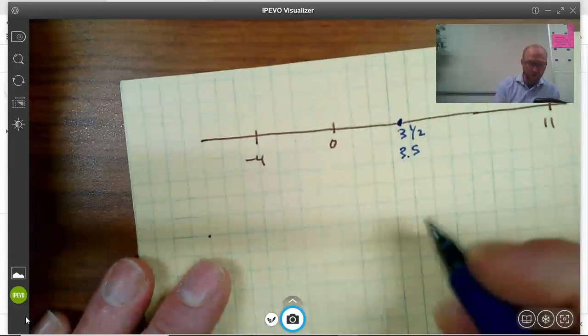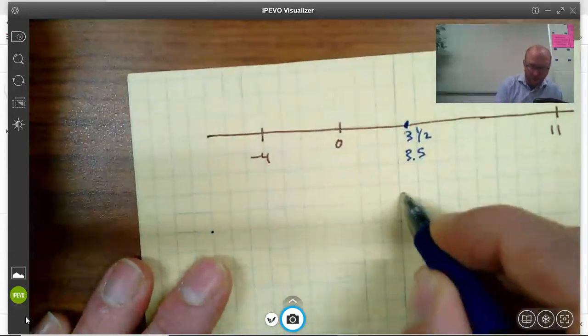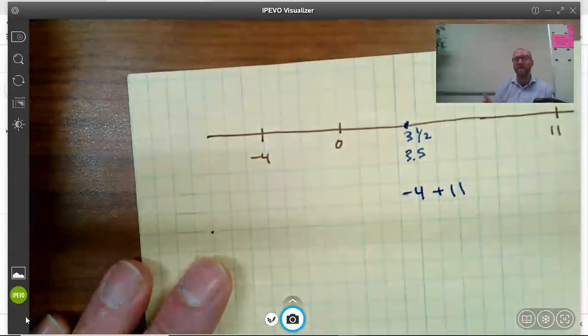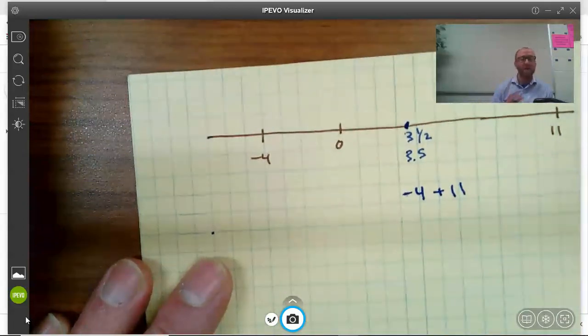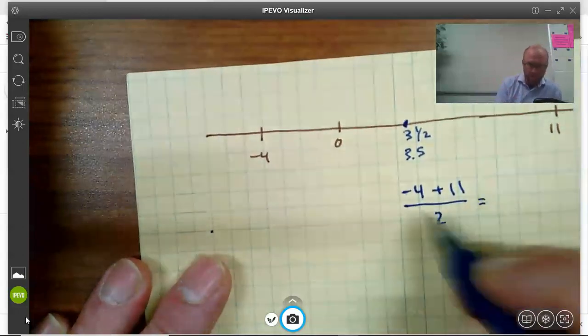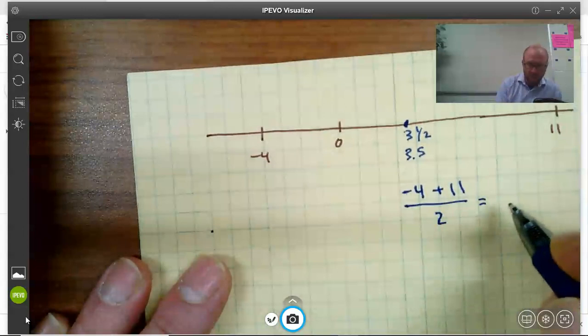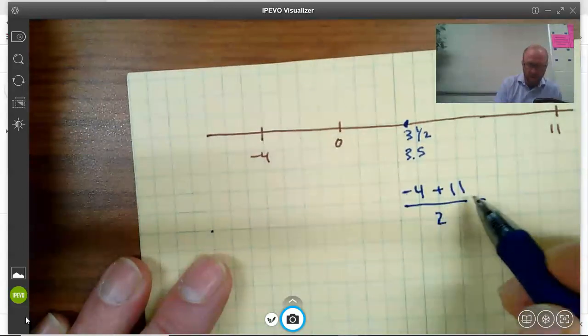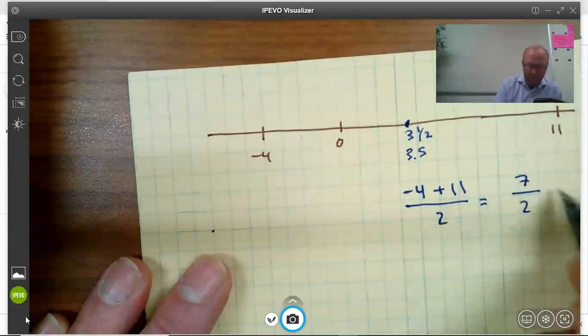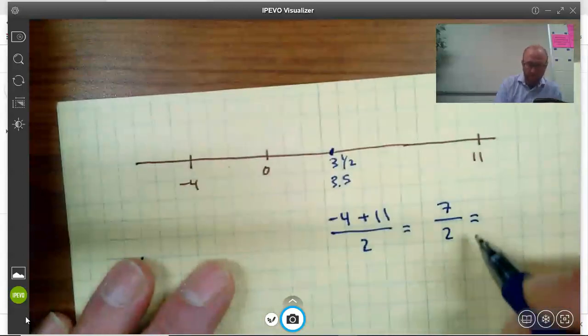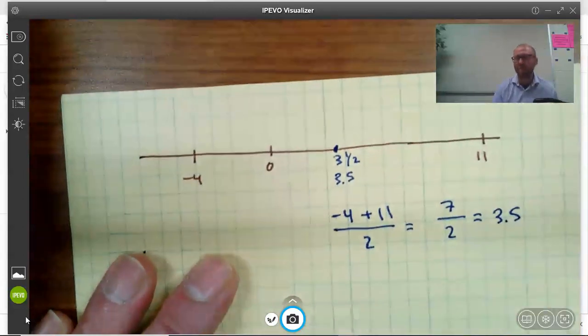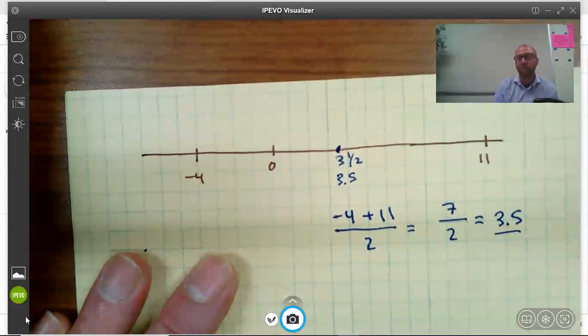So here, for example, if I wanted to find the average, I would go negative 4 plus 11. So you just add together the two numbers and then you divide by the number of numbers, which is 2. Divided by 2. See, negative 4 plus 11 is 7. 7 over 2, and that equals 3.5. You can punch it in your calculator and check. So the halfway point is 3.5.